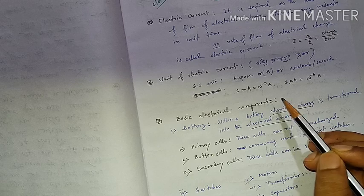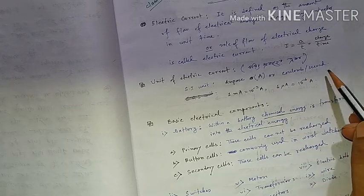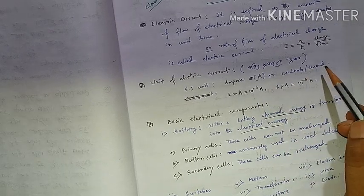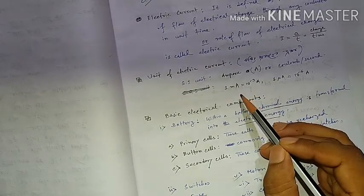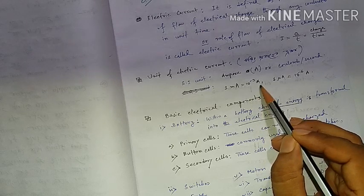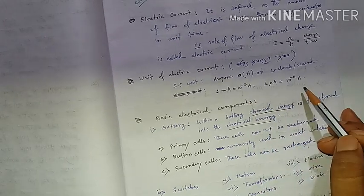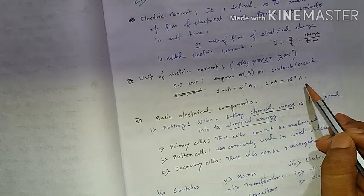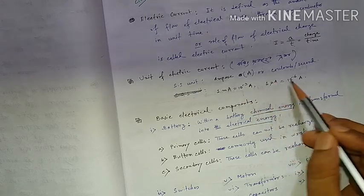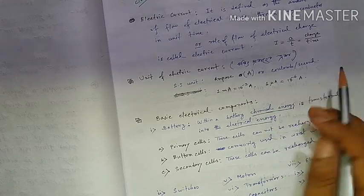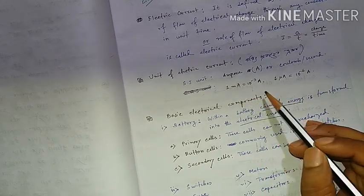The unit of current is 1 mA. We can also write 1 mA, 1 µA, and 6 mA. These are very small values of current that we work with.